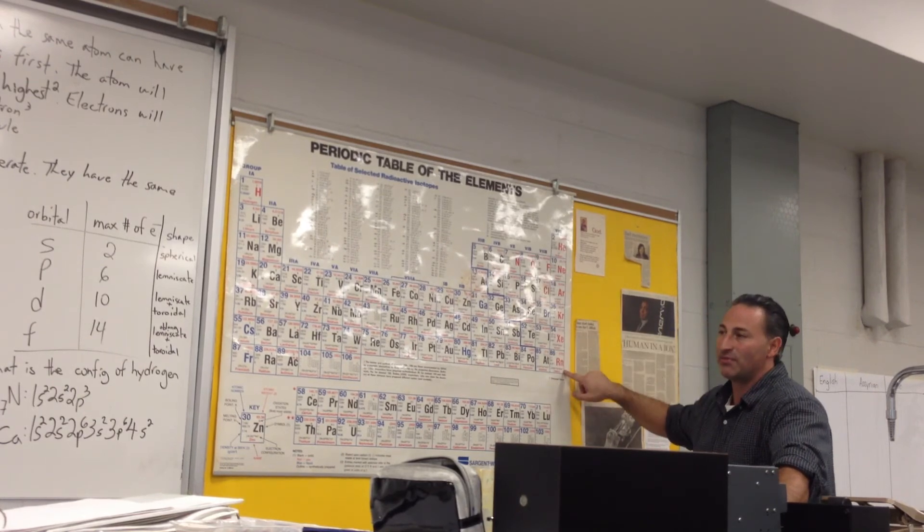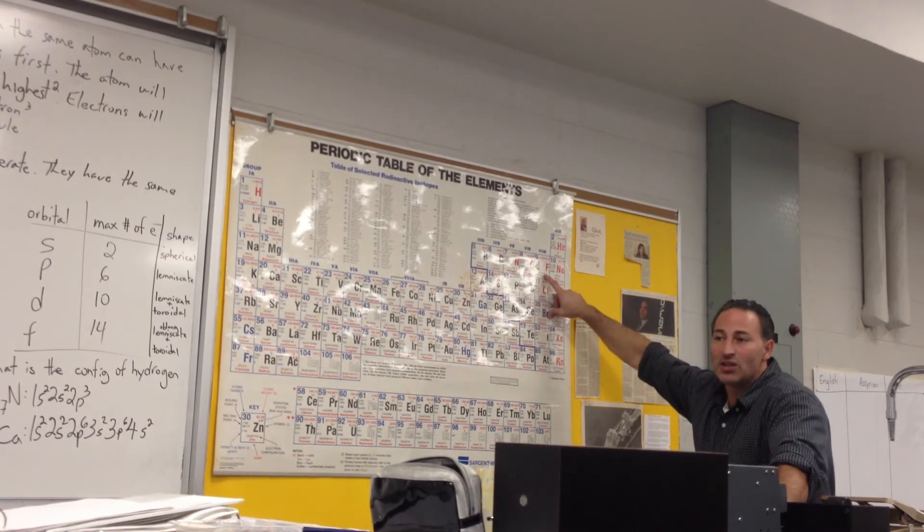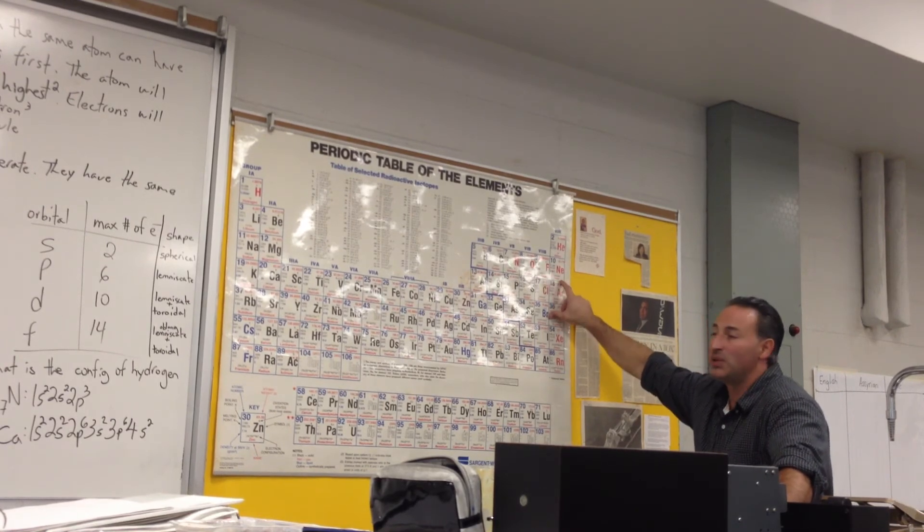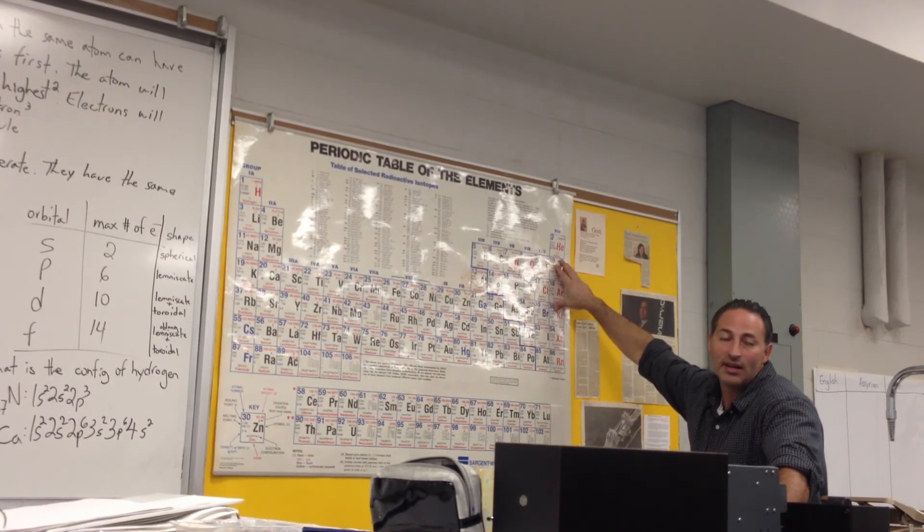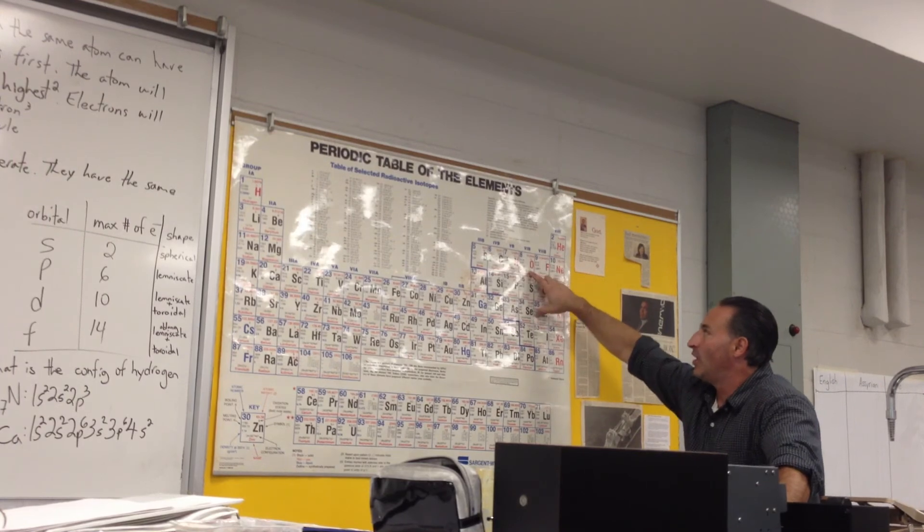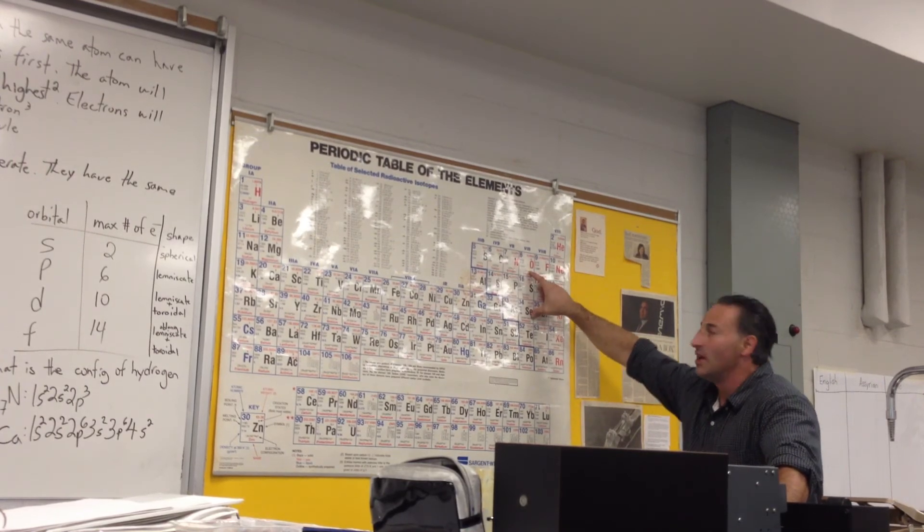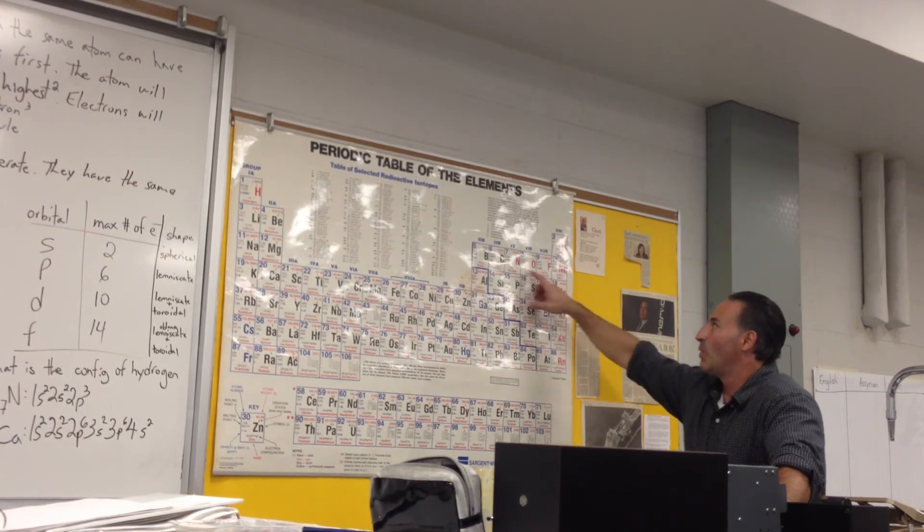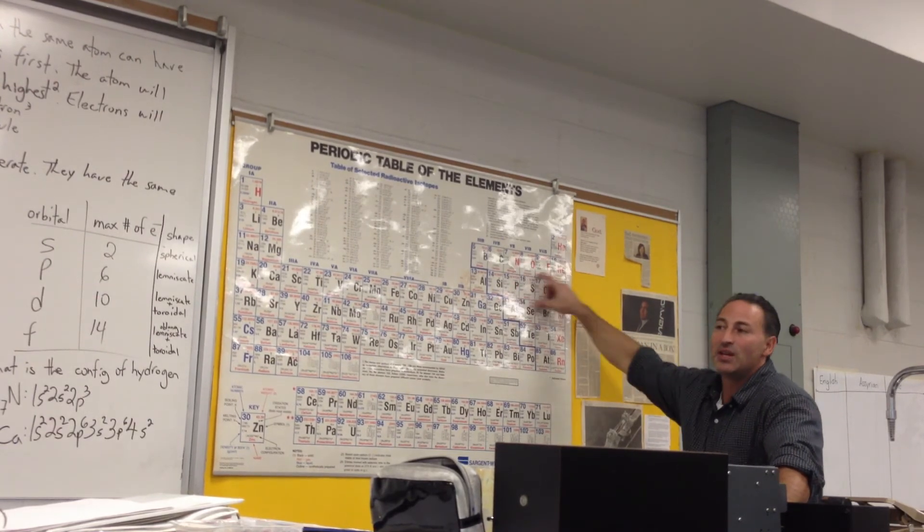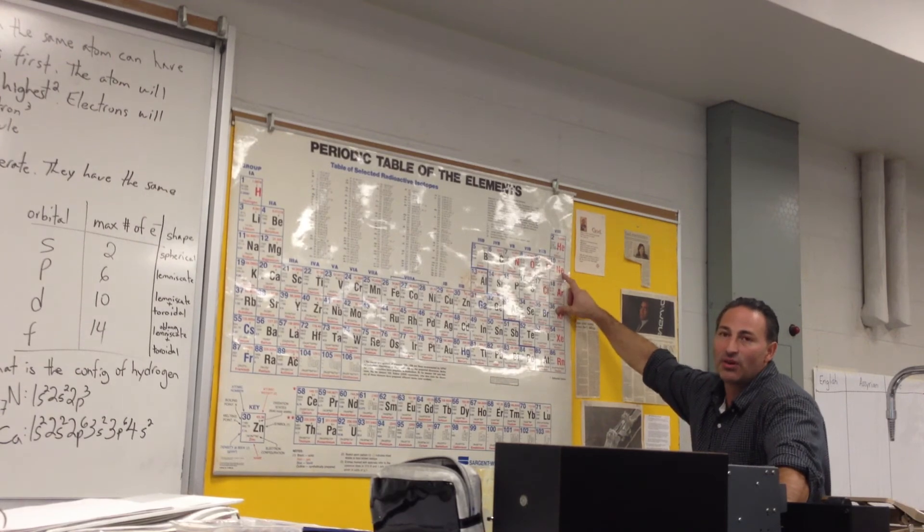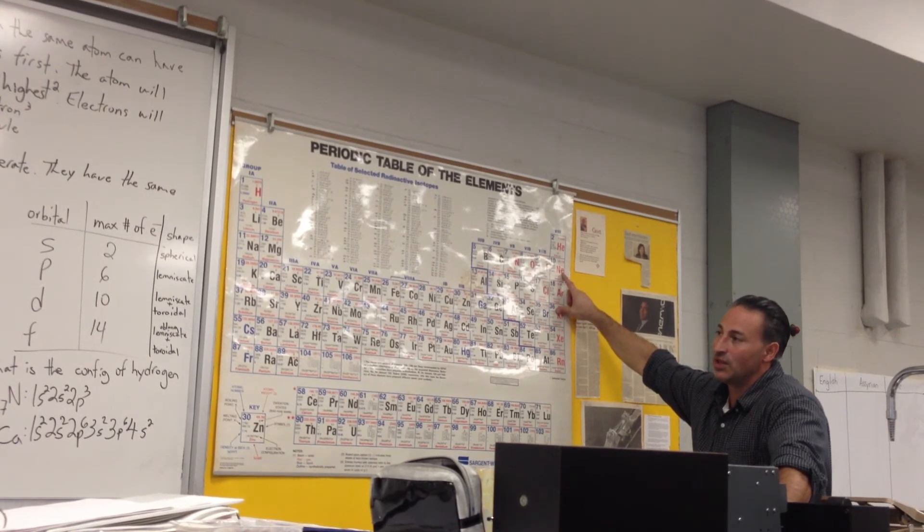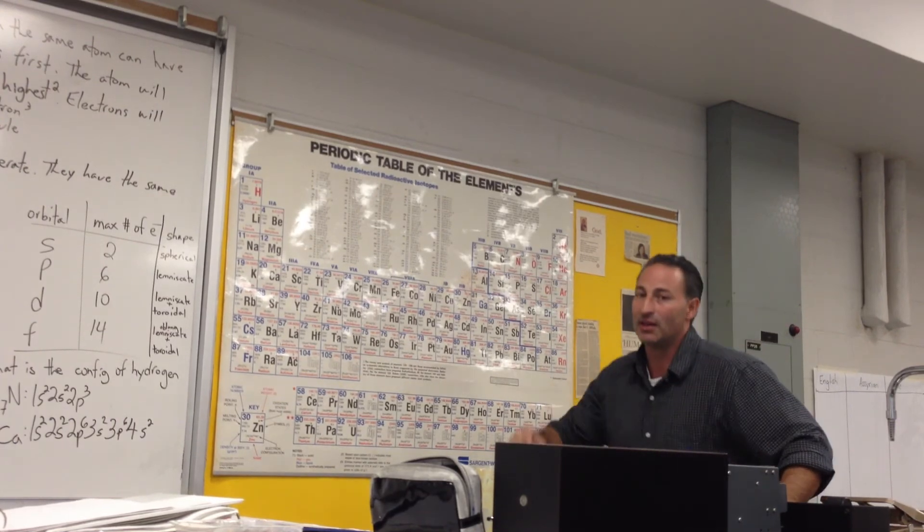All the noble gases are P6. When fluorine takes on a negative charge, it gets an extra electron. It goes from P5 to P6. That's why chloride is a stable anion. When oxygen gains two electrons, it also becomes P6, and that's why oxygen takes on a negative two charge. When nitrogen takes on three electrons, it goes from P3 to P6, and therefore nitride is a stable anion.